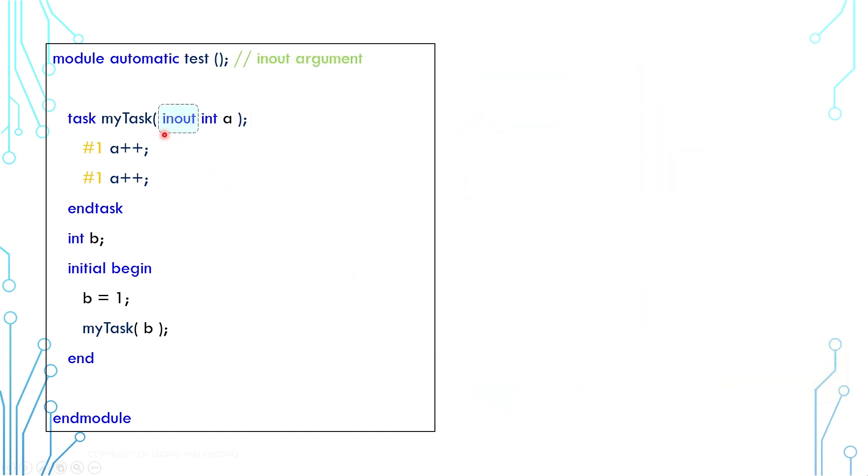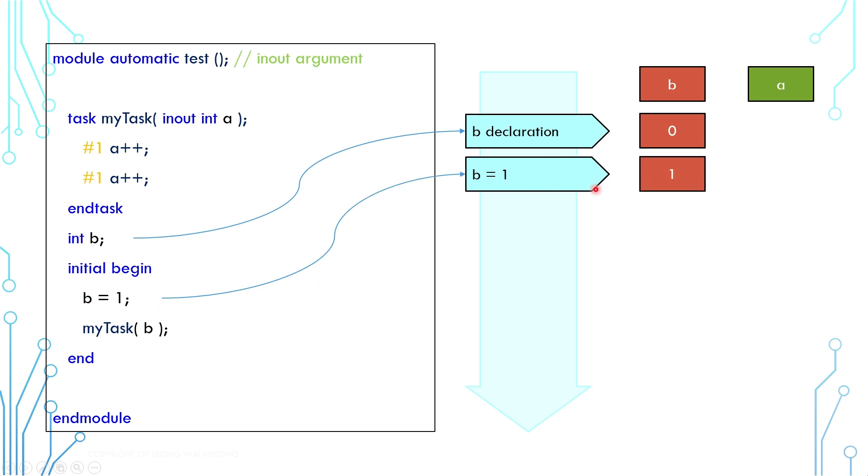Now let's move to in-out argument. You might have guessed, basically, in terms of behavior, it's a combination between the input and output argument. The beginning is the same. B is created and defaulted to 0. And then B is assigned to 1. And then the task is called. And the value of B is passed to the argument A.